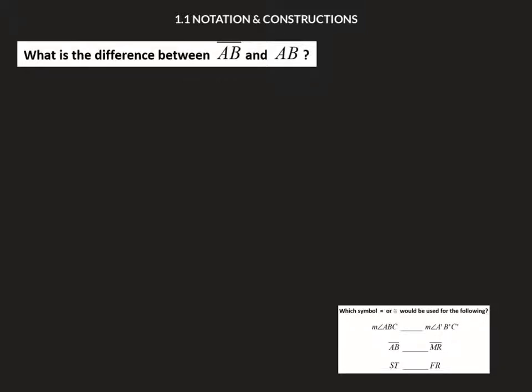Notation is an absolutely critical thing in geometry. You see two very similar looking items here: one that has AB with a line over it and one that just has AB. These represent two very different things.